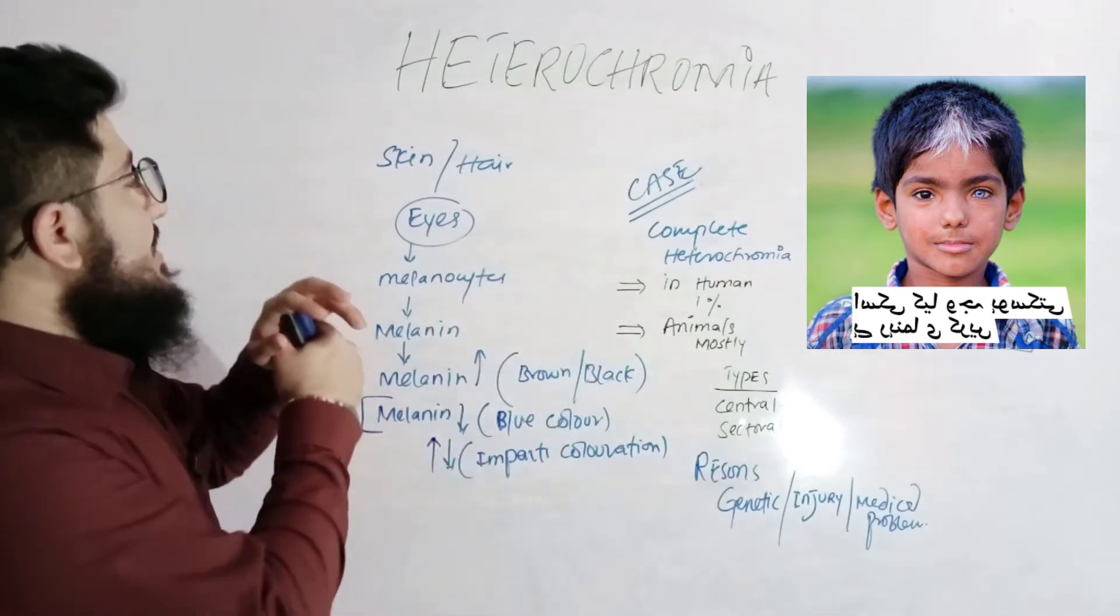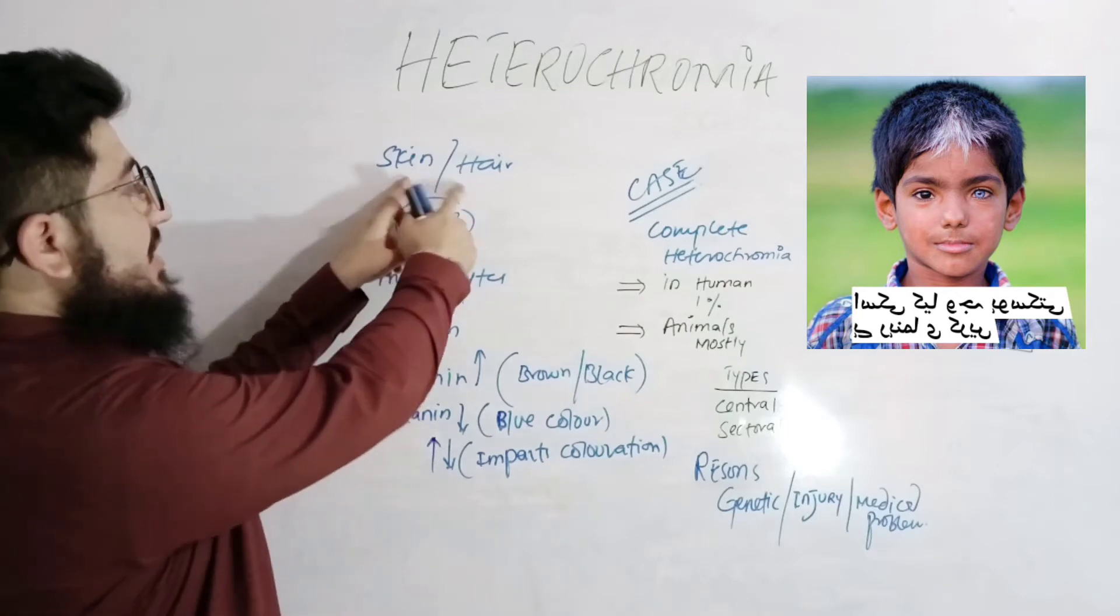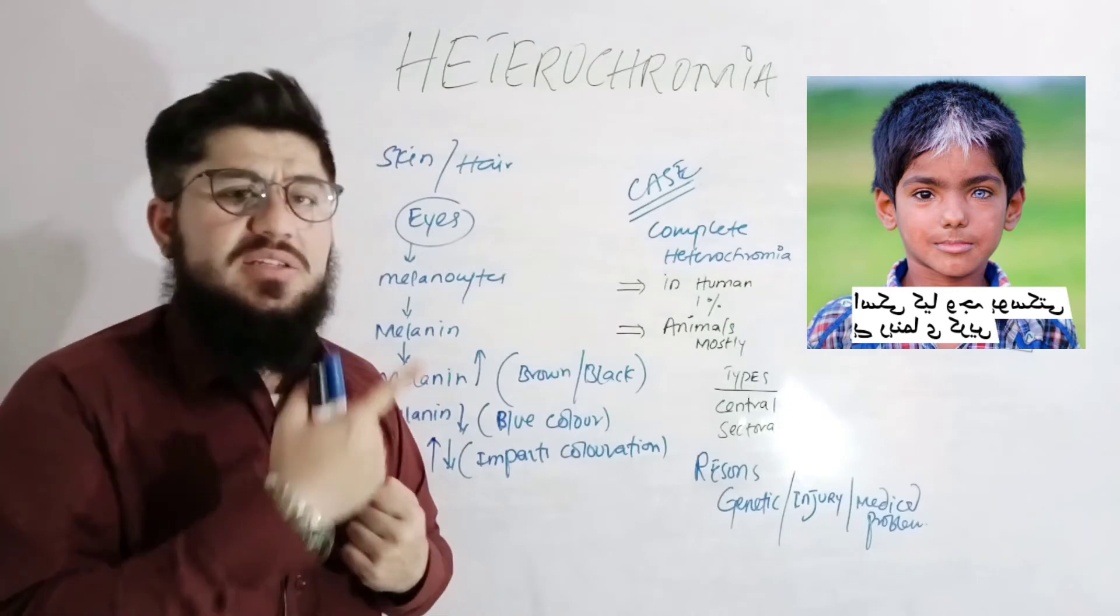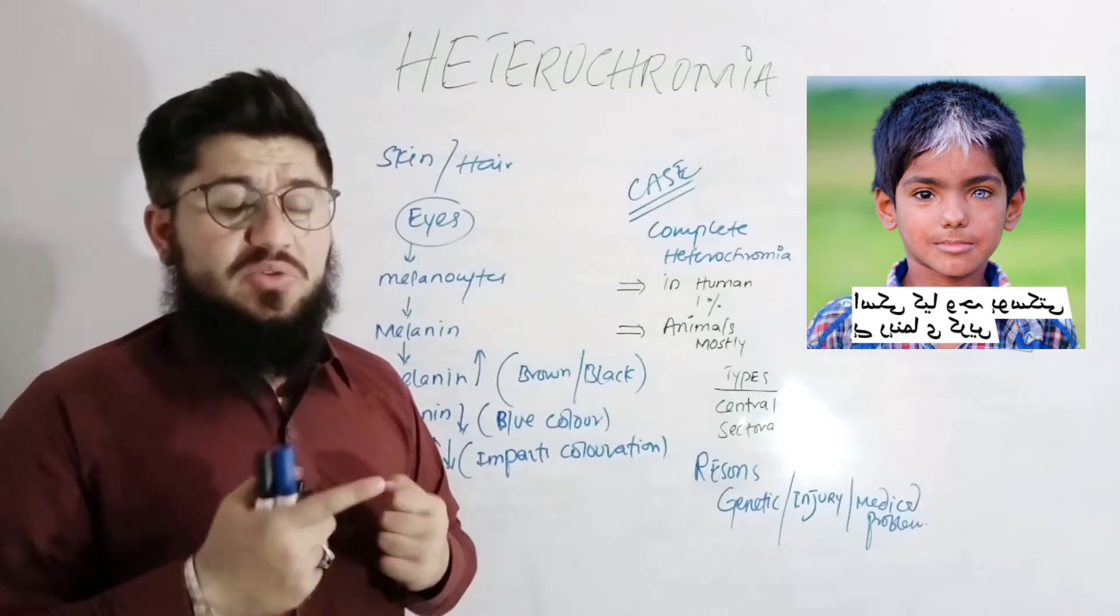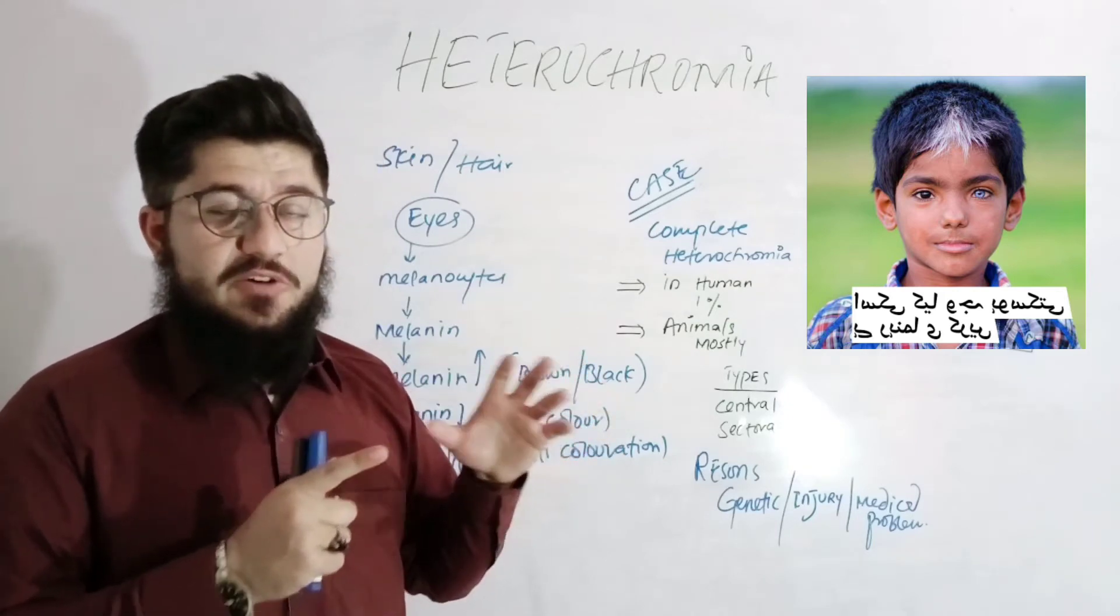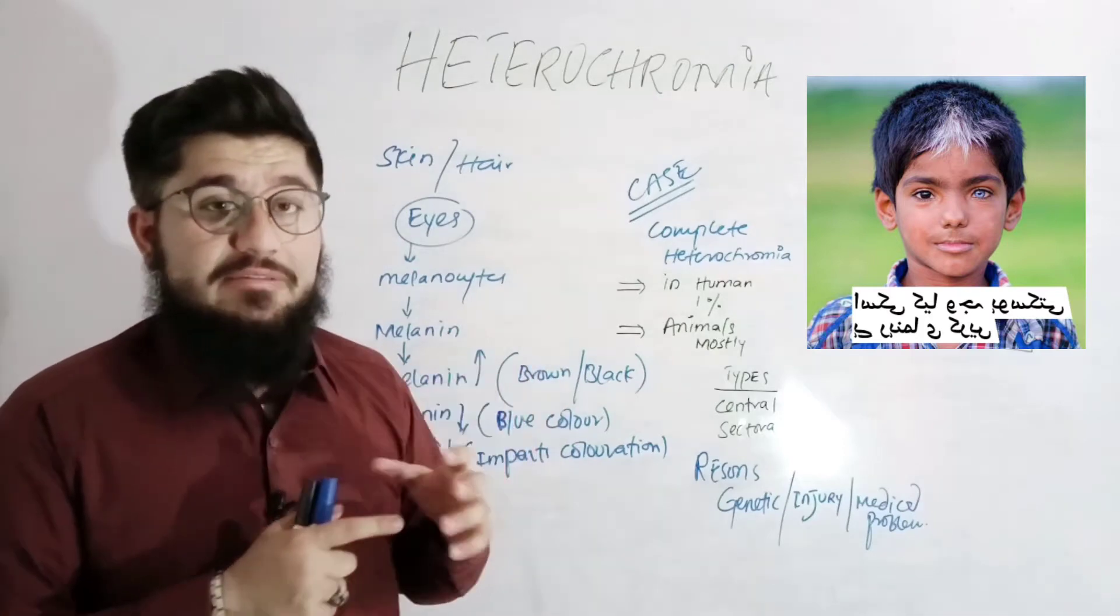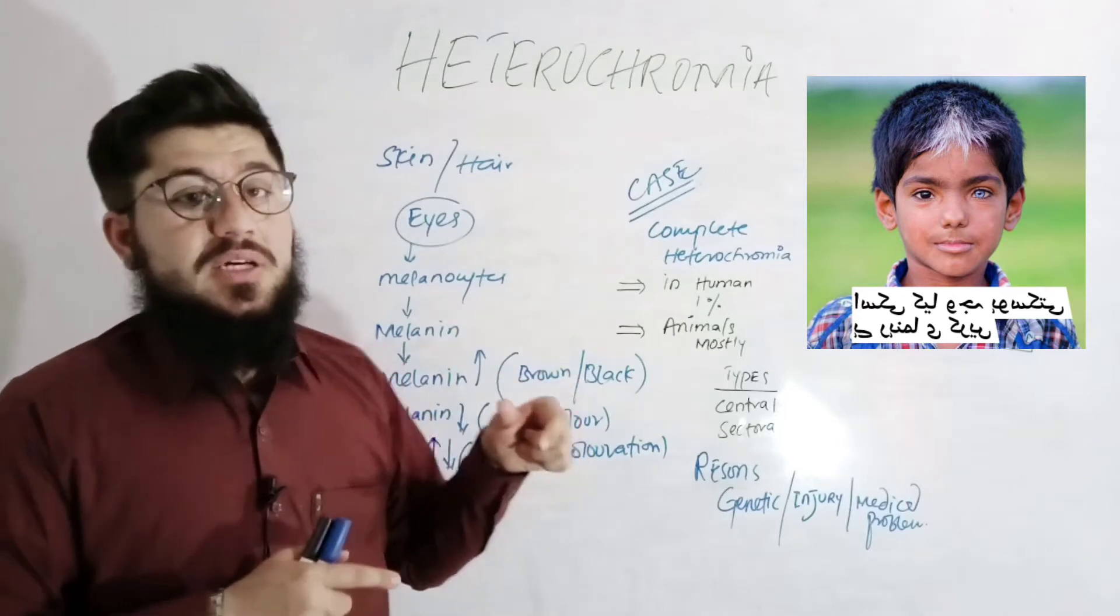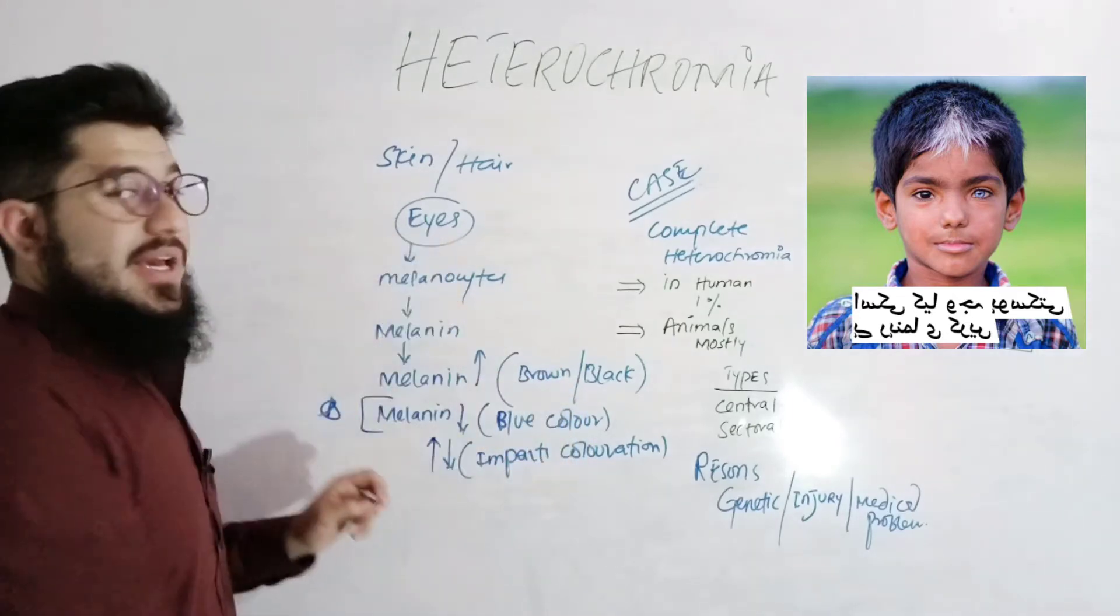The reason behind is just like we have skin here, different types of skin. We have varieties available in colors. Now these colors of the skin here are because of what? Because of melanin, which is produced by the melanocyte. So the same is the case in the eyes.